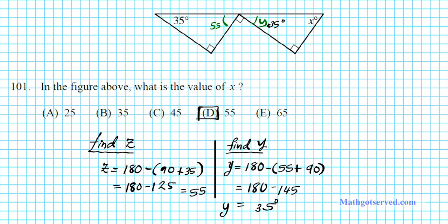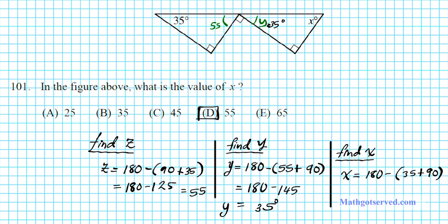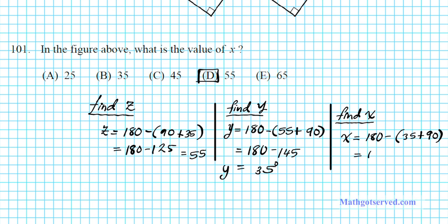Now, even if you do not know the AA similarity postulate, you can still figure out angle x using basic geometry theorems. The triangle angle sum theorem gives us x equals 180 minus the sum of the other two angles, which is 35 plus 90. So 180 minus 125 gives us 55 degrees. The answer is option letter D.